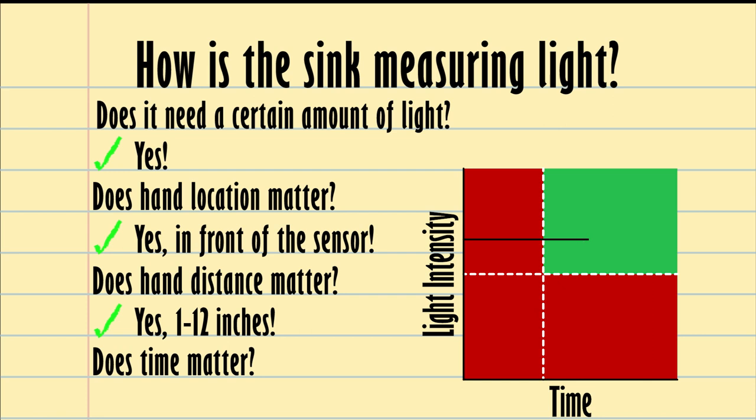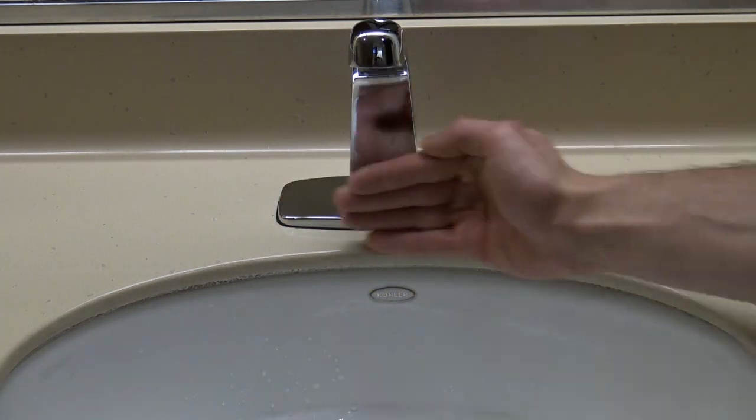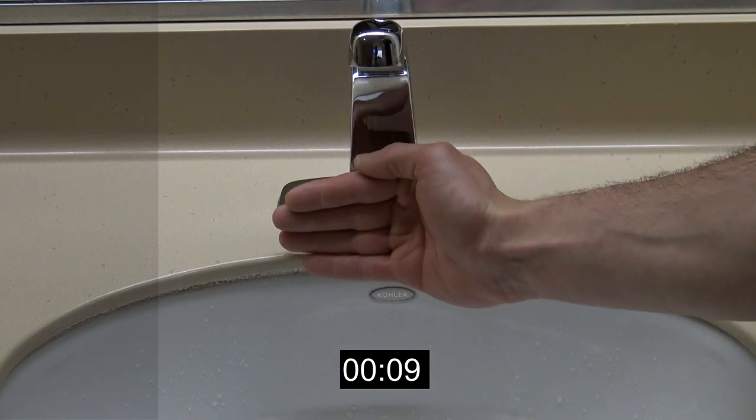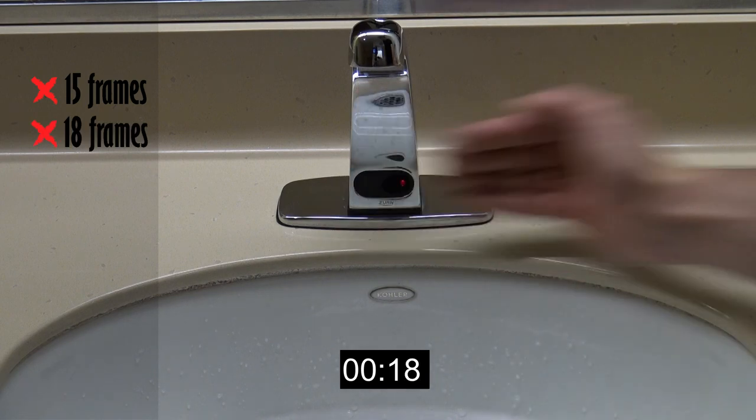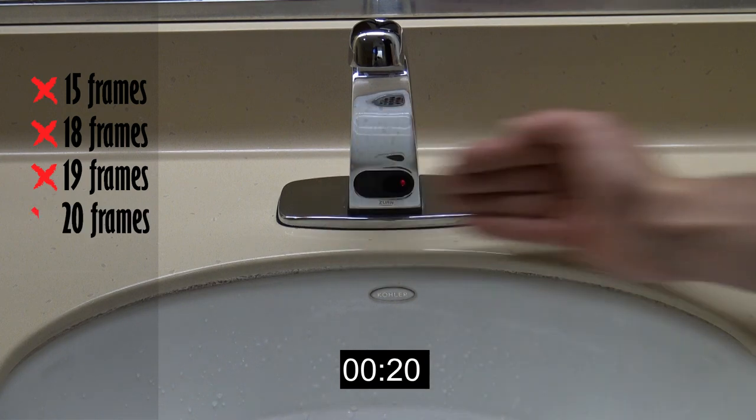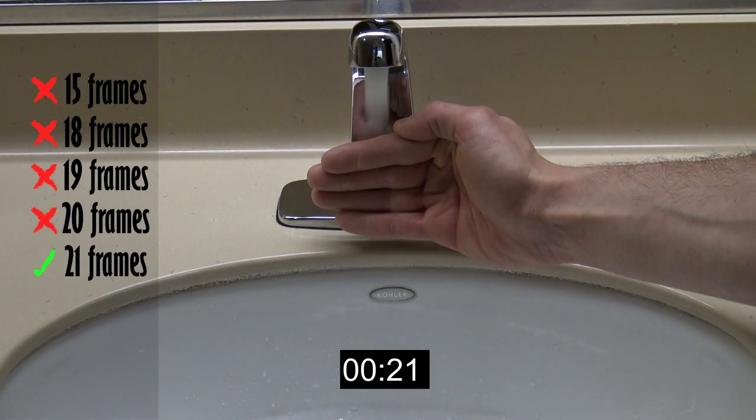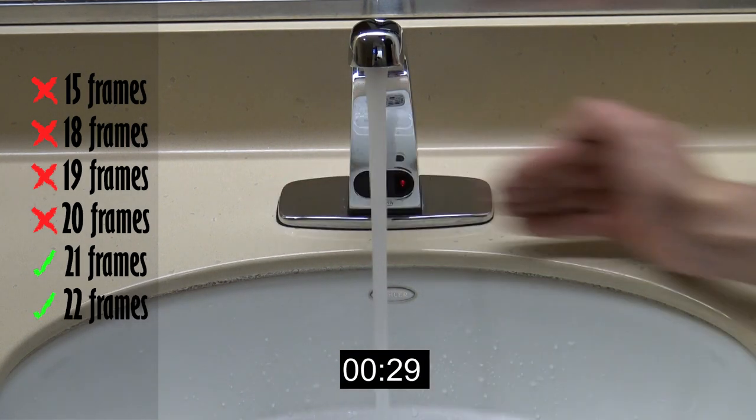I recorded my hand going in front of the sensor for different amounts of time. We put a timestamp on it so we could slow down the video and see exactly how long it takes from when I put my hand in front of the sensor until the water turns on. Once my hand is there for about 21 to 22 frames, which equates to about one second, the sink turns on. That means that the sink does need a certain amount of time, that we could say is about one second.